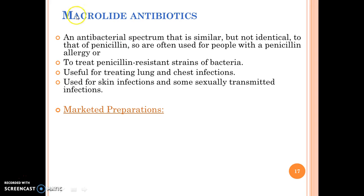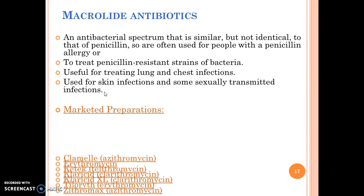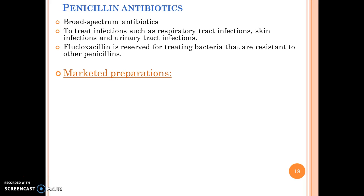Macrolide antibiotics have an antibiotic spectrum similar but not identical to that of penicillin, so they are often used for people with penicillin allergy, to treat penicillin-resistant strains of bacteria, and are useful for treating lung and chest infections, skin infections, and some sexually transmitted infections. These are the marketed preparations of Macrolide antibiotics.